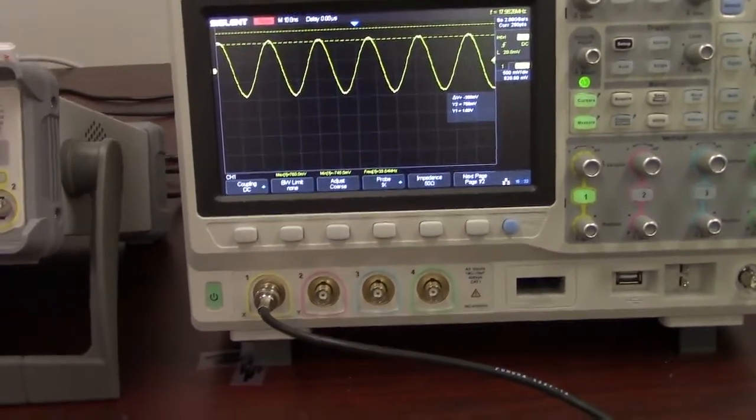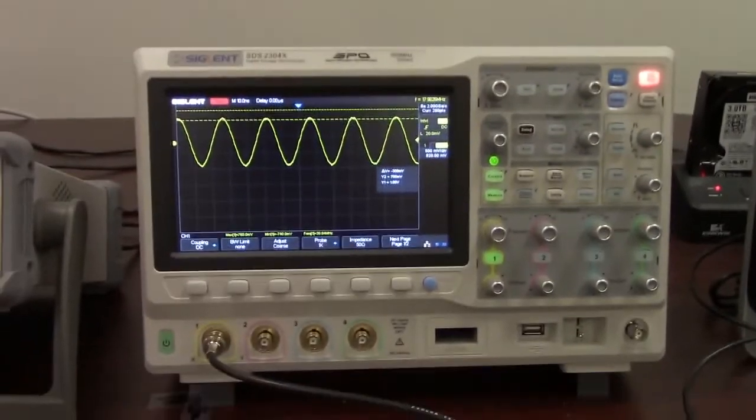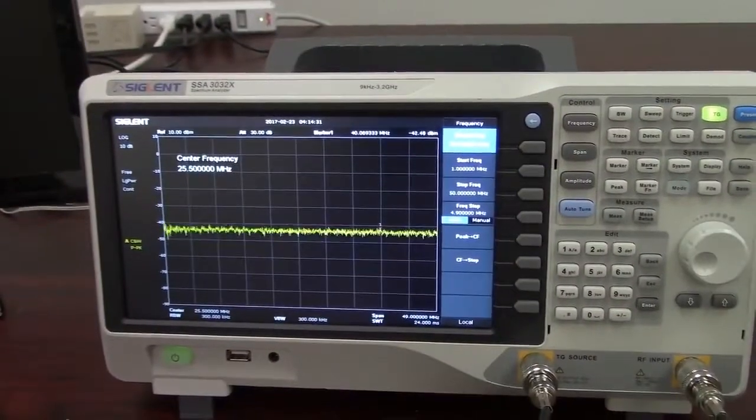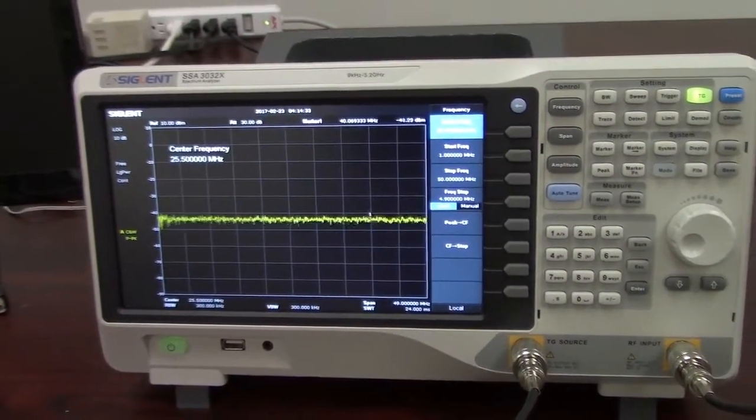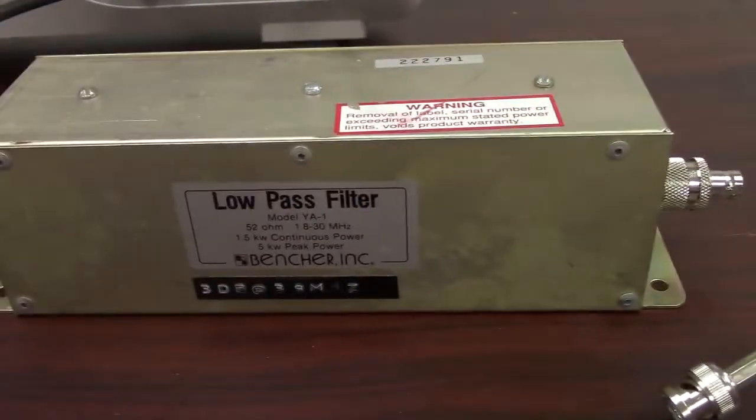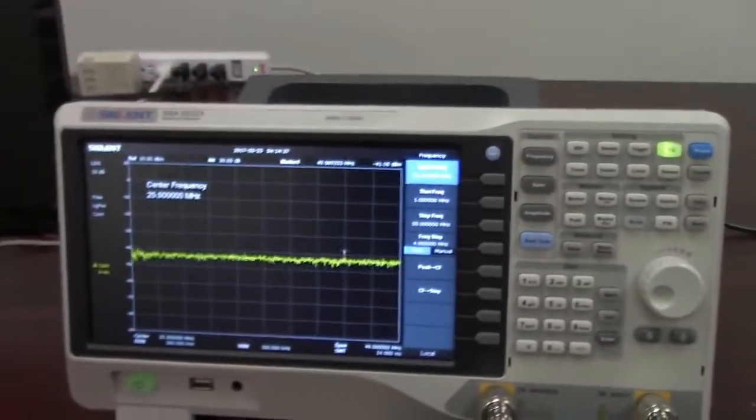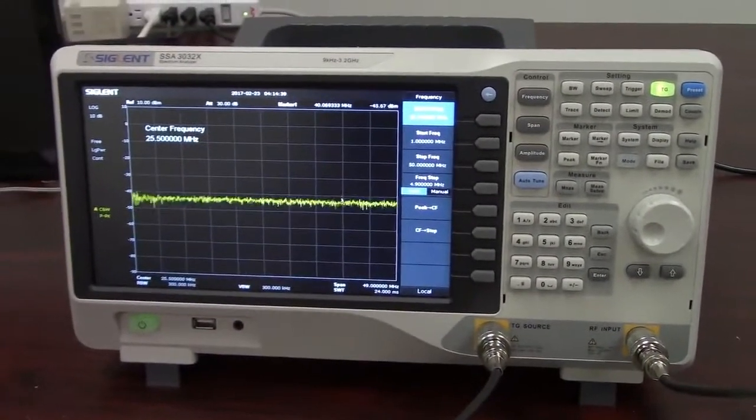So now let's compare that to a more standard way of measuring it, which would be using a spectrum analyzer with a tracking generator. Now let's take a look at the same filter. And we're going to use a spectrum analyzer with a tracking generator.